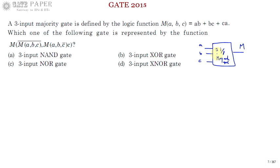The meaning of a majority gate is: out of three inputs, whenever at least two are logic one, the output is one. So if ac are one, or ab are one, or bc are one — or all three are one — output is one. In all other cases output is zero. That is the function of a majority gate.